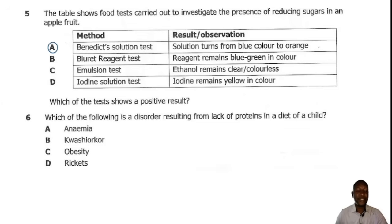Question 6. Which of the following is a disorder resulting from lack of proteins in a diet of a child? So when a child is lacking proteins in the diet, the deficiency disease they suffer from is kwashiorkor. So the correct answer is B.